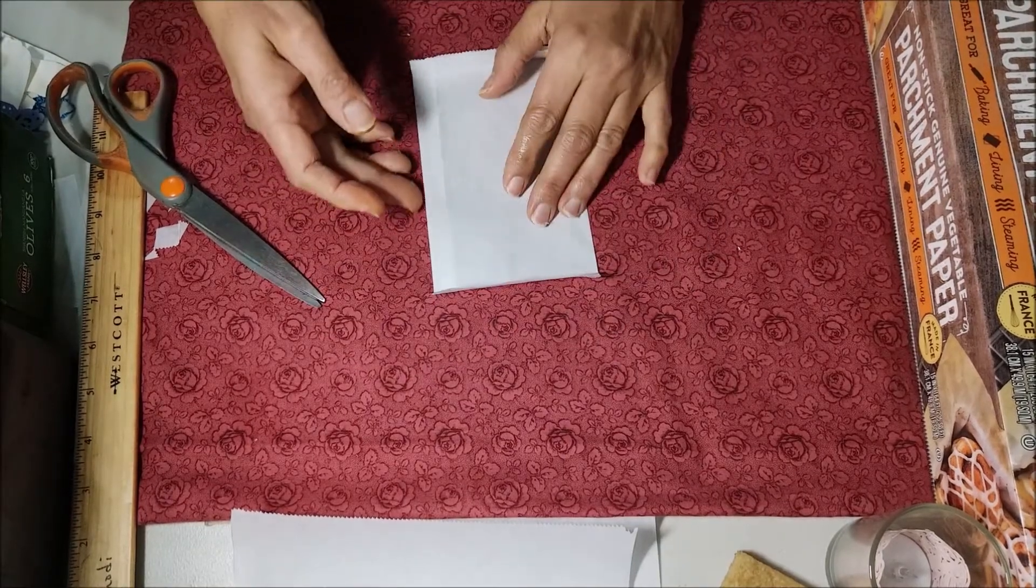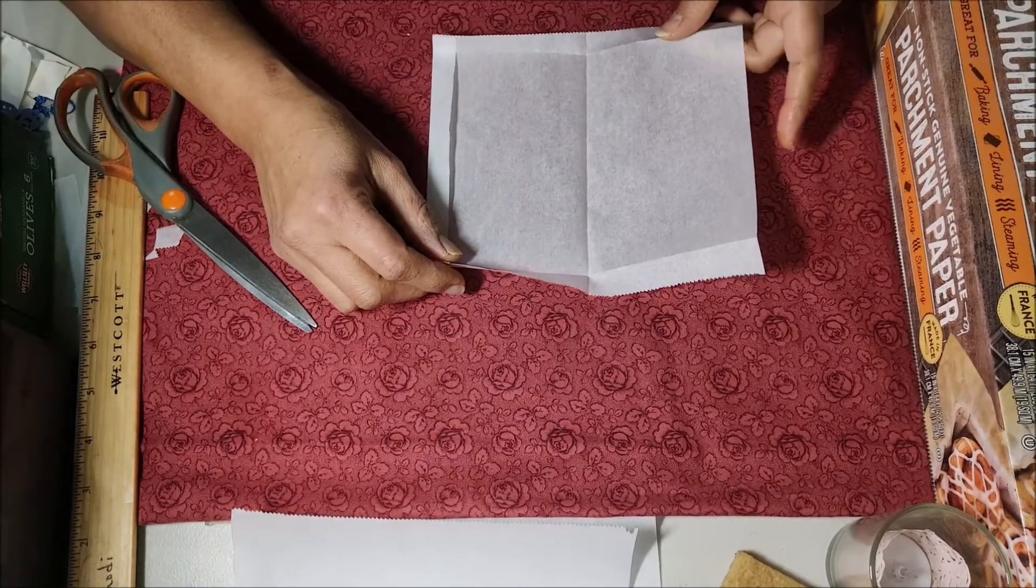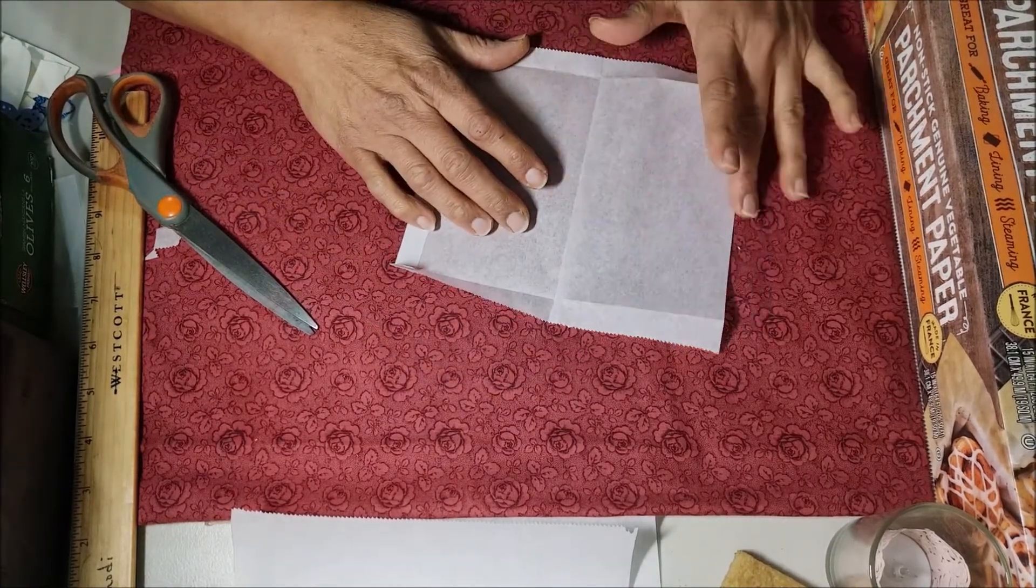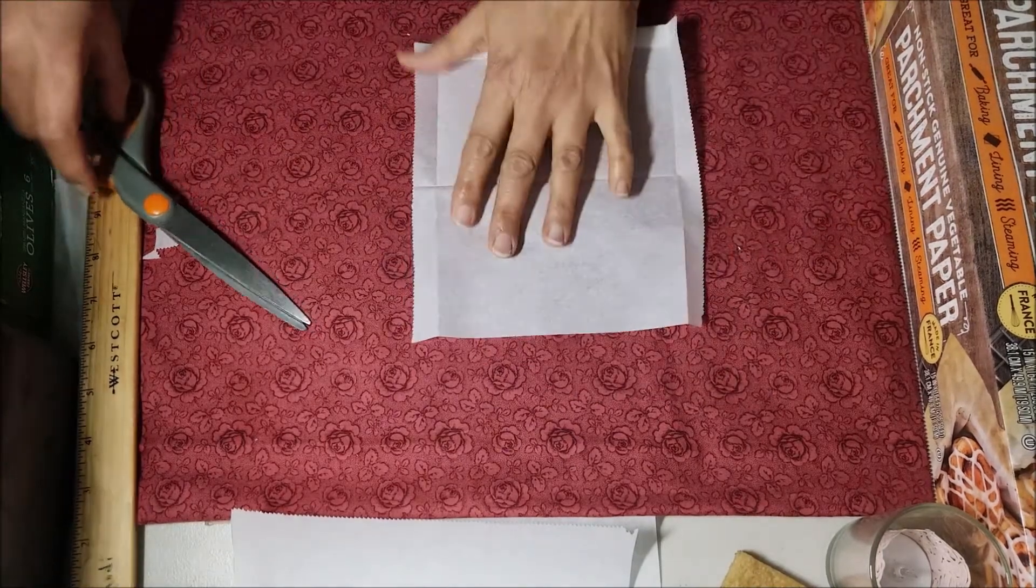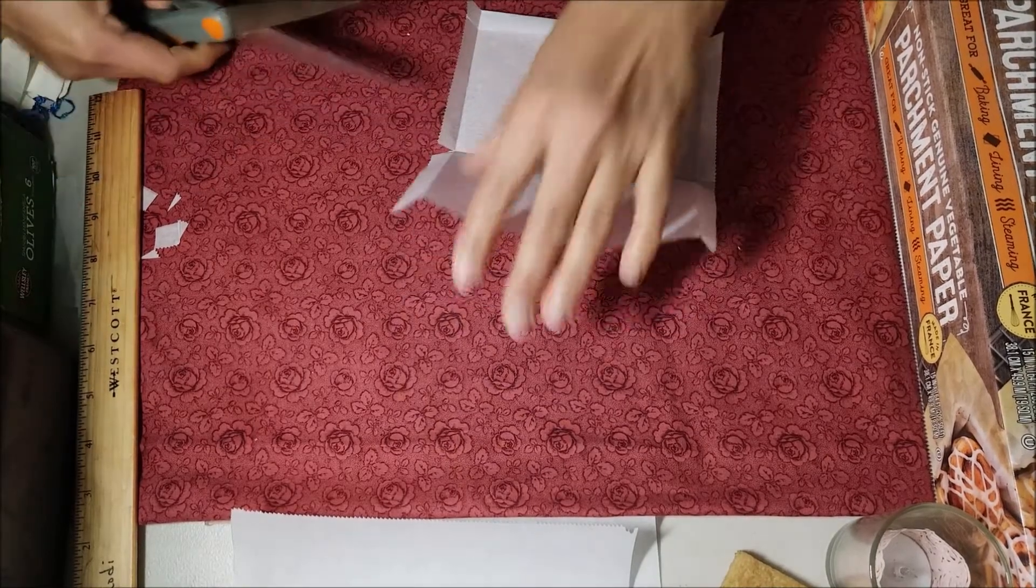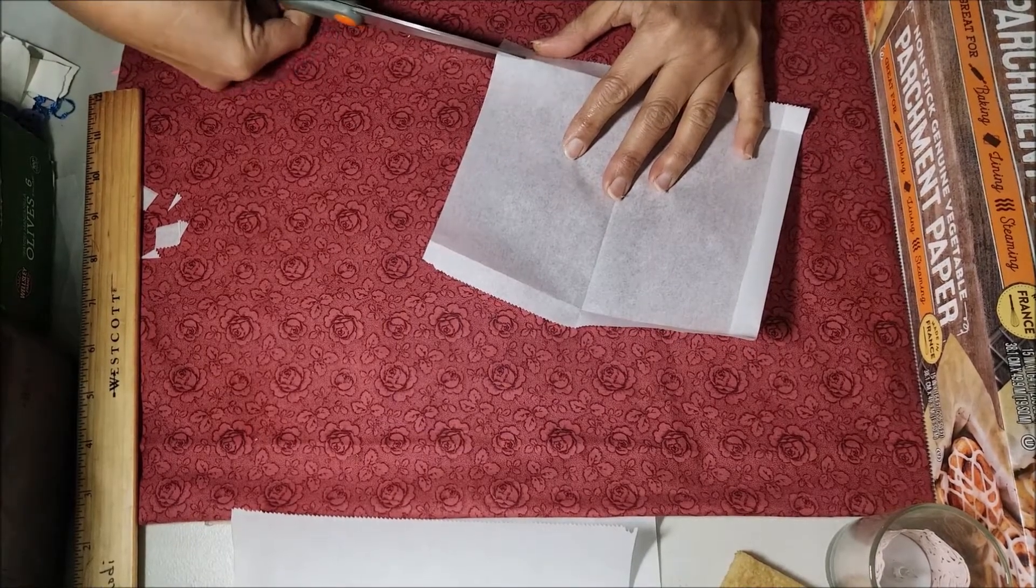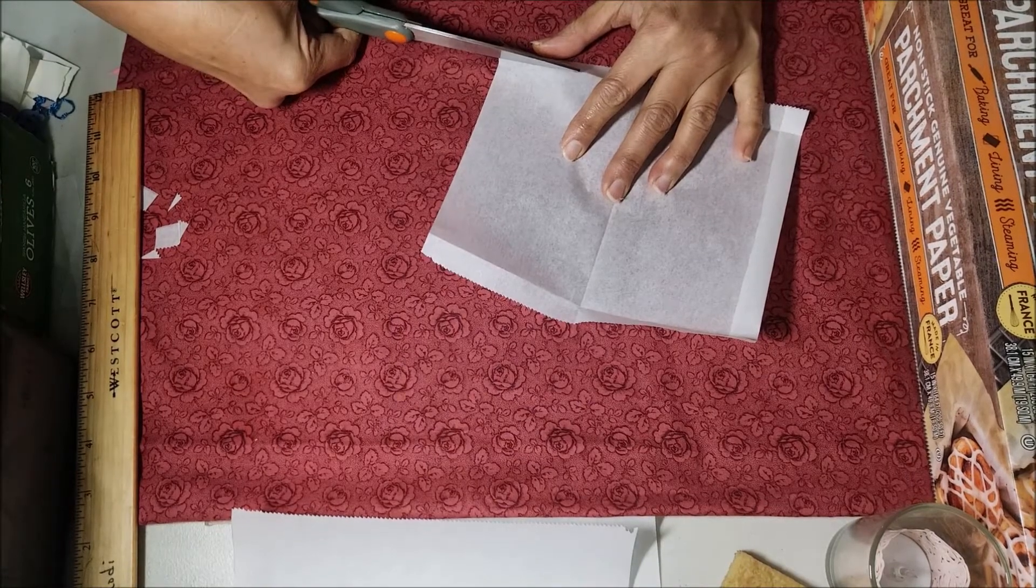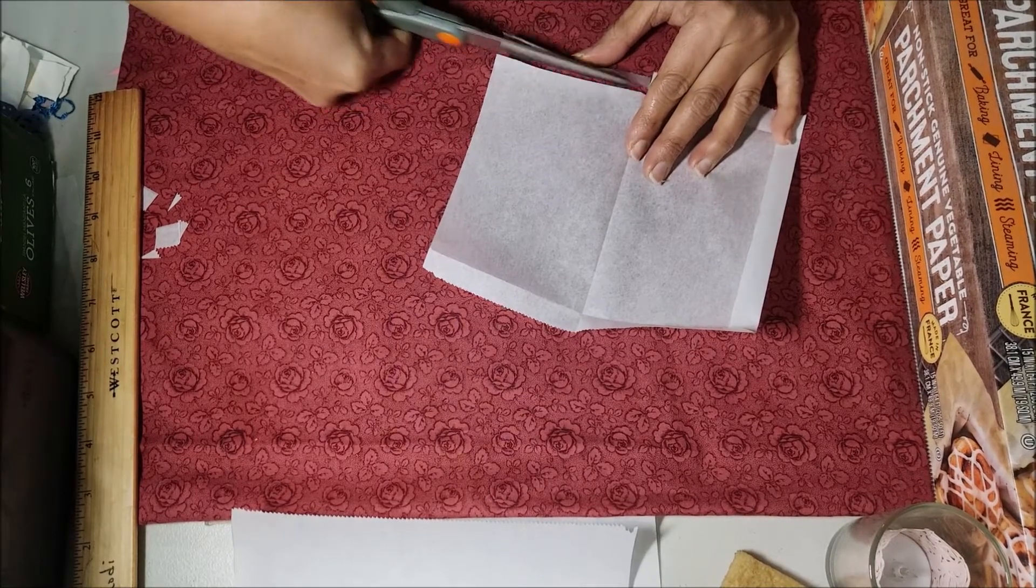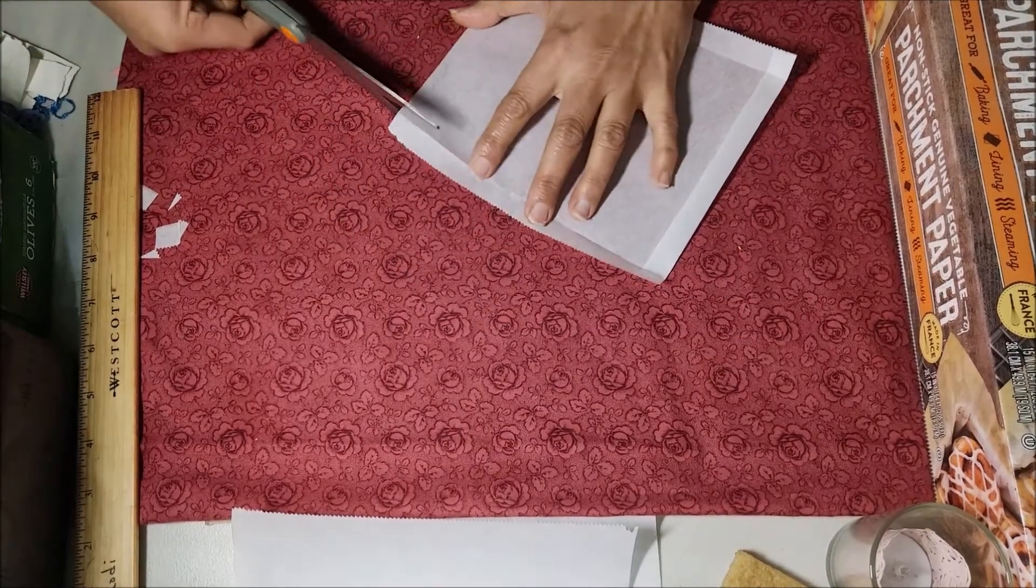Very well, now keeping always the first fold on the right hand, we open what would be the envelope, and we are going to cut the top part and the bottom part of the left side, we are going to cut. Very well, we cut the top part and now we cut the bottom part.